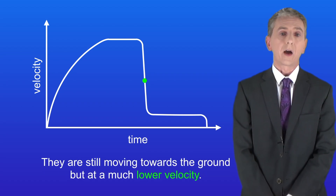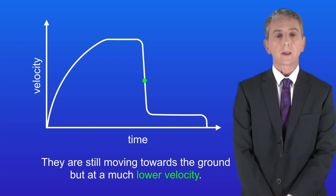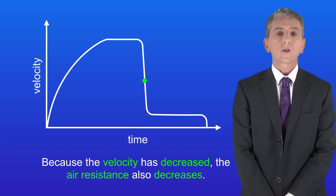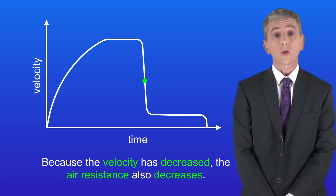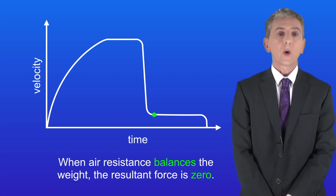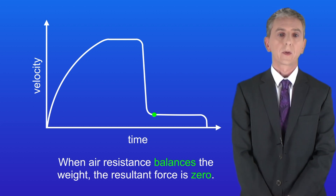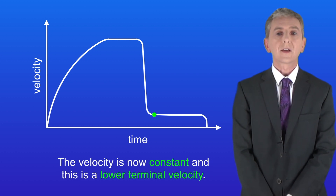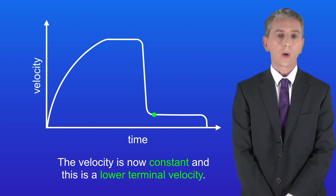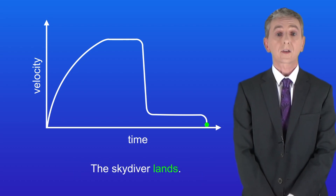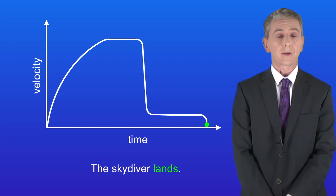They're still moving towards the ground but at a much lower velocity. Because the velocity has decreased, the air resistance also decreases. When air resistance balances the weight the resultant force is zero, the velocity is now constant — this is a lower terminal velocity. Finally the skydiver lands.